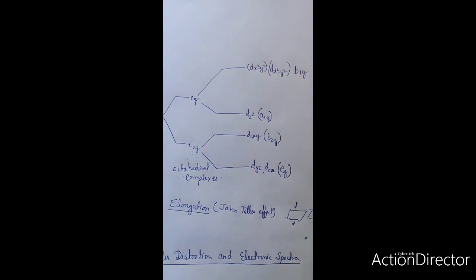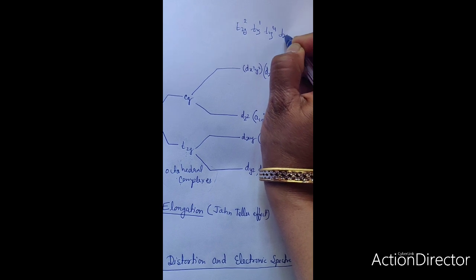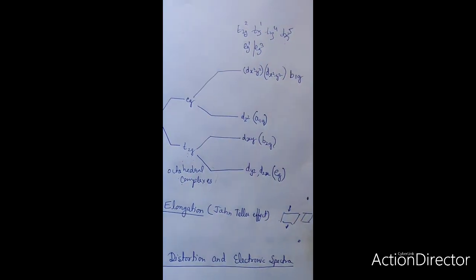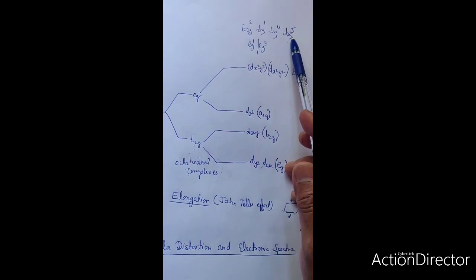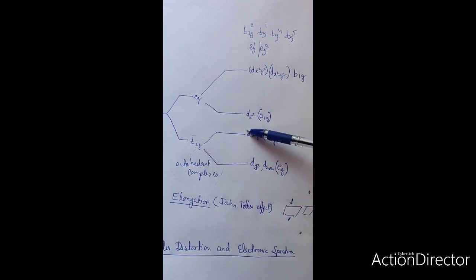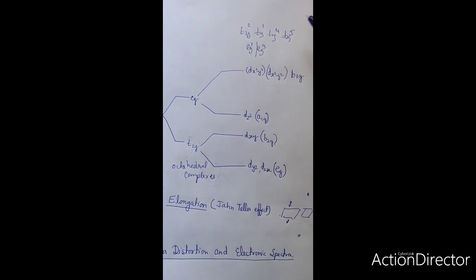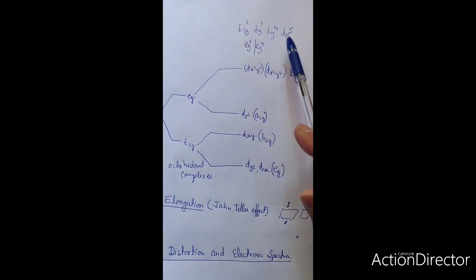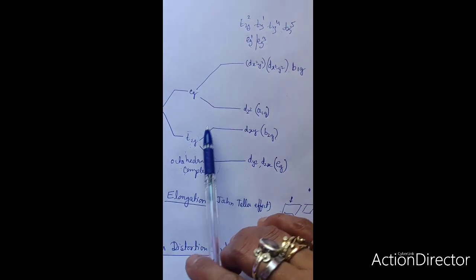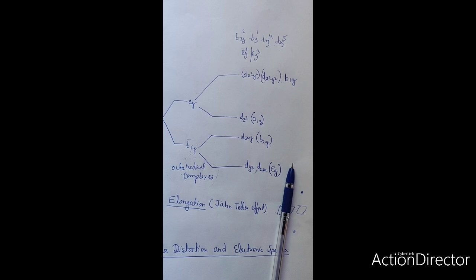Generally t2g may also be asymmetrically filled — like t2g², t2g¹, t2g⁴, t2g⁵ are asymmetrical fillings of t2g. In case of eg¹ and eg³, they are asymmetrically filled orbitals. When these orbitals are asymmetrically filled, they remove their degeneracy and split into respective orbitals. A greater amount of distortion occurs when eg is asymmetrically filled. This is known as Jahn-Teller distortion.